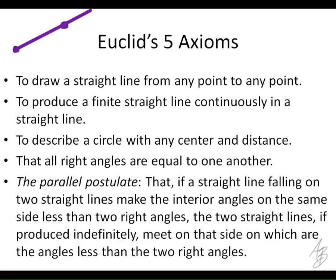The fifth axiom is called the parallel postulate. It reads: 'If a straight line falling on two straight lines makes the interior angles on the same side less than two right angles, the two straight lines, if extended indefinitely, meet on that side.' That's not crystal clear. Interestingly, the first half of Euclid's geometry didn't even use the parallel postulate — it came in quite late. The first four are simple; the fifth is much more complex.